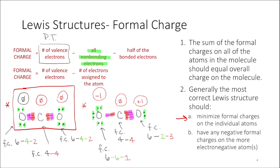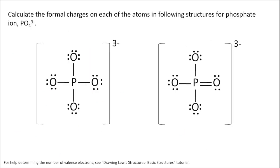Now the second consideration will come up in the next example. Let's look at two Lewis structures for the phosphate ion. I didn't go through drawing the Lewis structure with you — if you need more help with that, I do have a tutorial for it. Both of these are correct Lewis structures for the phosphate ion, but I want to consider the formal charge on each of the atoms in each structure.